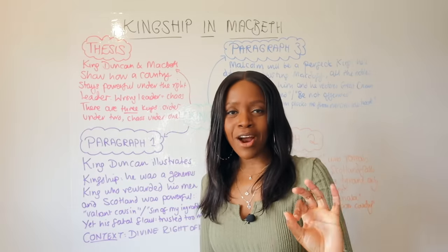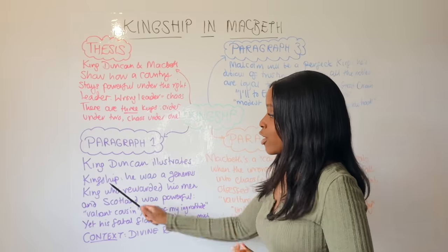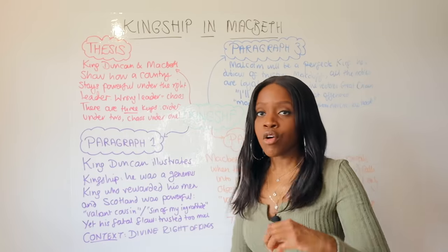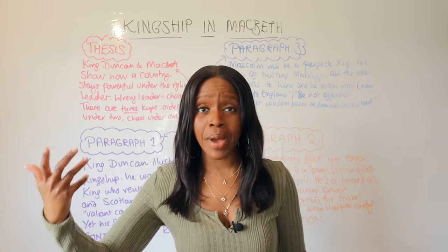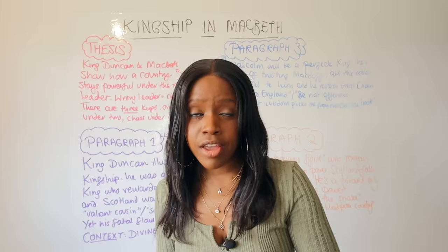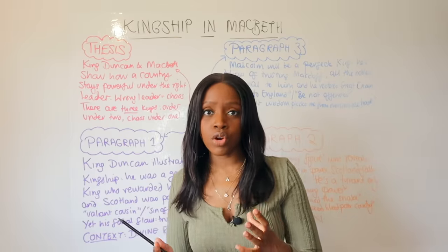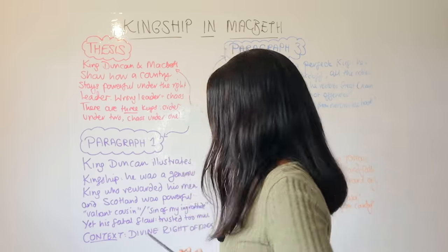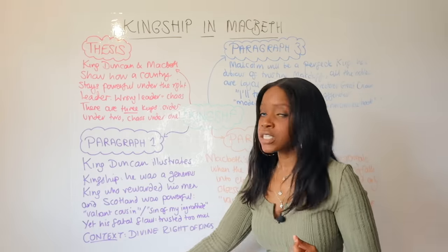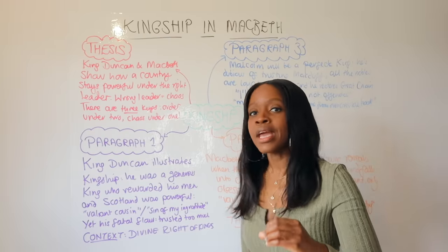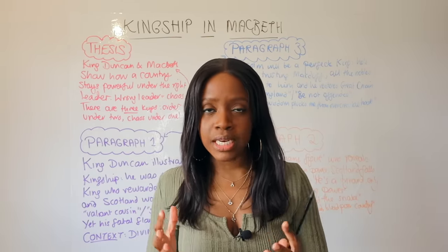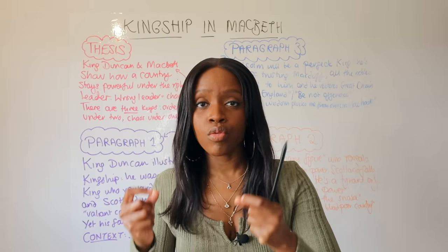Your first grade nine paragraph on King Duncan should cover how he illustrates kingship as a righteous and generous king. He generously rewarded his men for great deeds - when Macbeth and Banquo won wars, he gave them titles, and Macbeth was made Thane of Cawdor. This is why Scotland was so powerful under him: he rewarded his men, so they were loyal in return. Key quotes include Duncan calling Macbeth 'valiant cousin' and saying 'the sin of my ingratitude weighs heavily on him' - showing his humility and generosity.